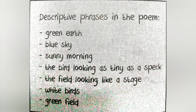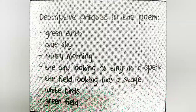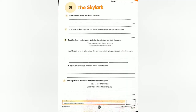The poet says that the bird looked as tiny as a speck. This comparison helps us visualize the bird more easily. All these words are examples of imagery. The poem describes a beautiful and peaceful scene in nature. The poet seems to be at peace, enjoying the sight of a skylark in a calm setting.